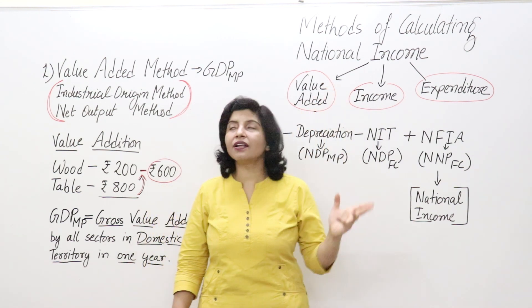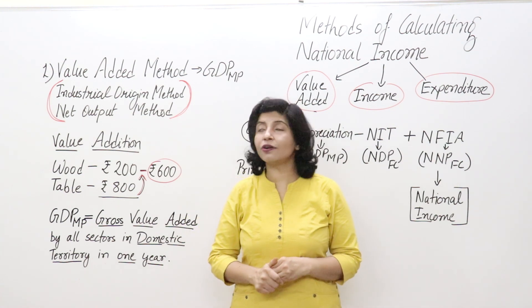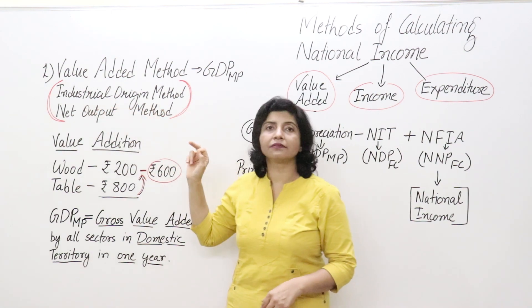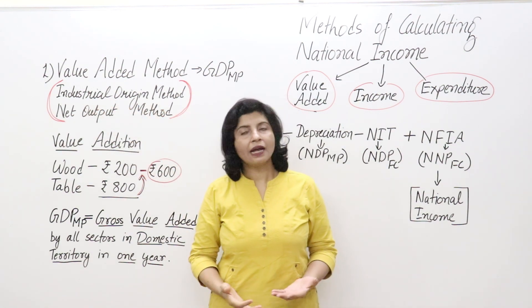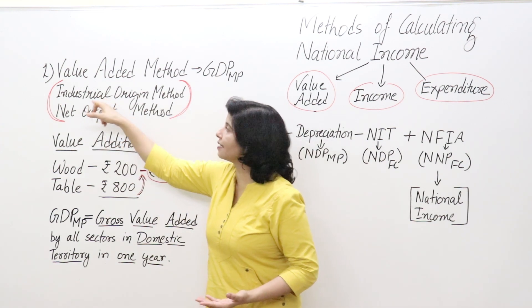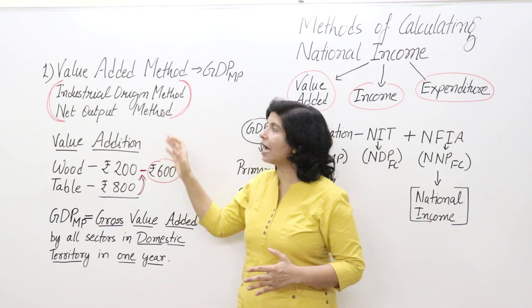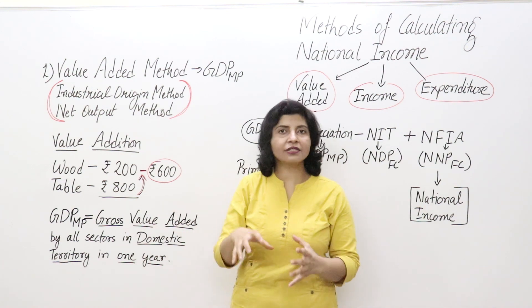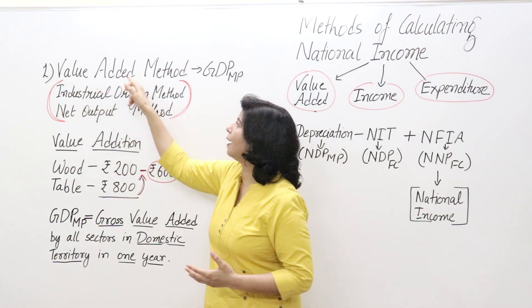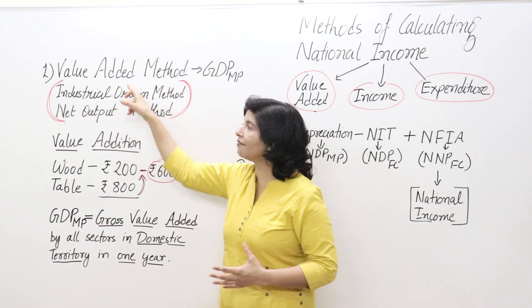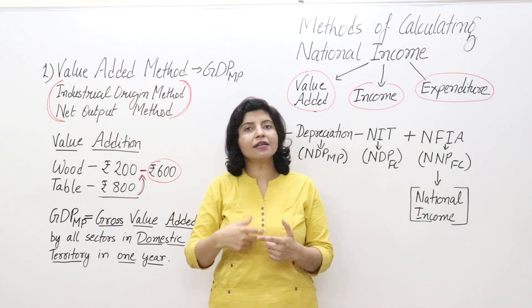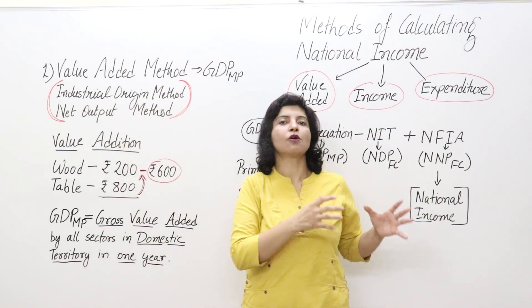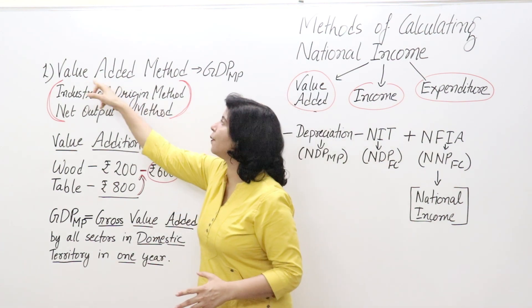We will start our discussion with the value added method. The value added method is also known as the industrial origin method or net output method. It is called industrial origin because industries produce output, and output is the measuring tool. These names are very important because you may have to answer them in MCQs as well as detailed answers.